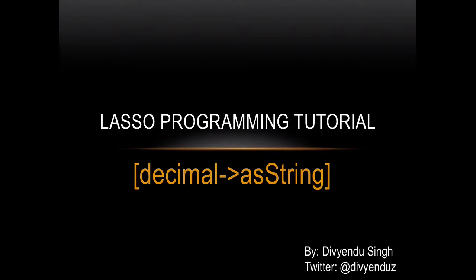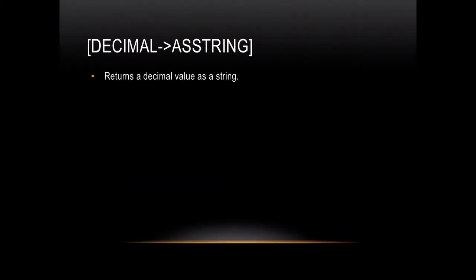In this tutorial I would like to talk about the asString function of the decimal object in Lasso programming. This function, as the name suggests, just returns the decimal value as a string.